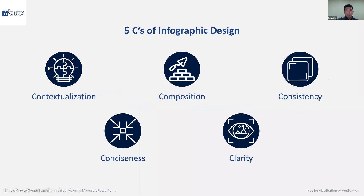This is the framework called the five C's of infographic design. There are five different aspects which all good infographics should have. First is contextualization — understanding what is the messaging or the theme behind the infographic you're trying to create. Next is composition, the fundamental design language of the infographic. Then consistency — the brand and visual consistency of the infographic. Next, conciseness — how do you identify which information you want your audience to focus on. And lastly, clarity — the type of graphics and media you use for your infographics.